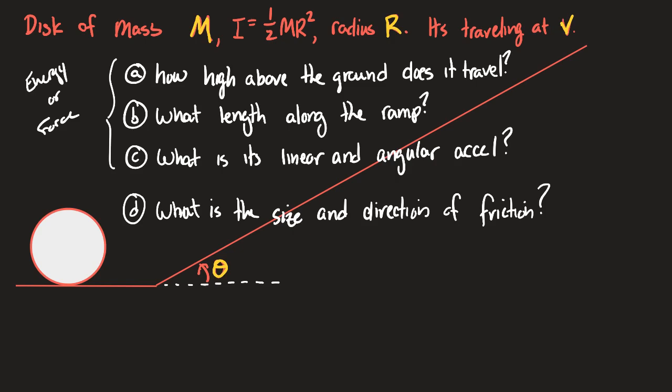Yes, let's assume it's rolling at the start. The only variable I want you to use is the linear speed V — if you need the angular speed, write it as V over R. Note that A and B are essentially the same question: once you find the height, use a triangle to get the length. C and D are harder. You can get C from kinematics or energy, but D requires forces — so this problem will force you to use both forces and energy.